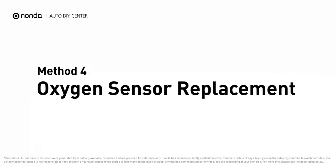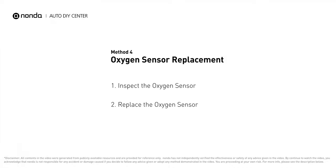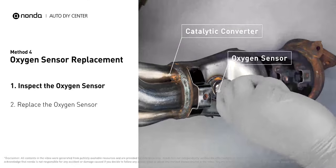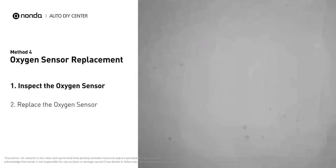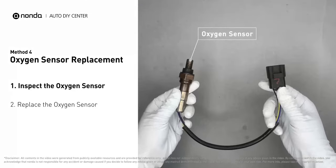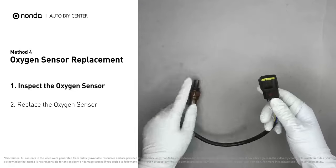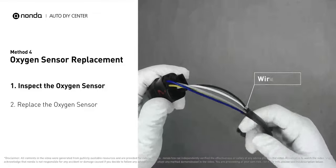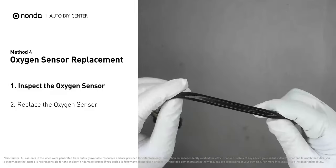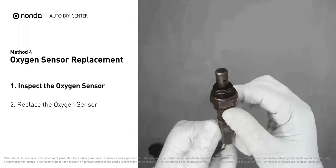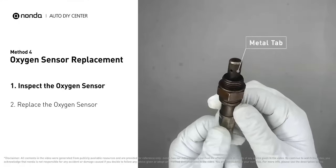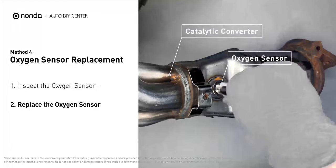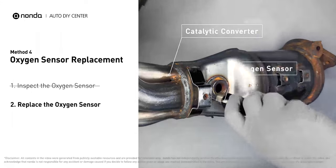Method 4: Oxygen Sensor Replacement. Carefully remove the oxygen sensor from the catalytic converter. Visually check the oxygen sensor's electrical connections, wire harness, and metal tabs for any damages. If damages are found, replace the oxygen sensor.